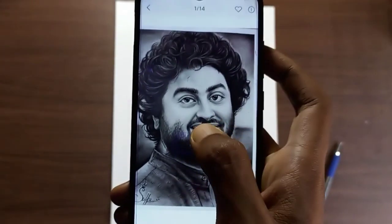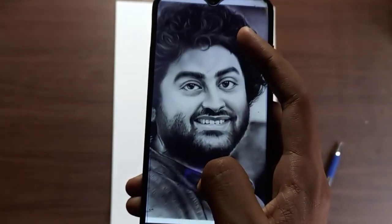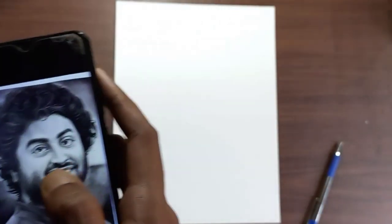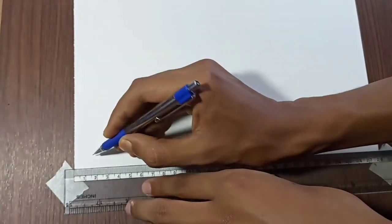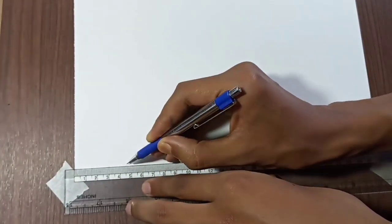So guys, we have our reference and we are going to use this A4 size sheet which is 140 GSM. Here I am going to stabilize this paper with masking tape. This drawing I am going to create using the grid method, so I am going to create a grid of 1.5 cm.